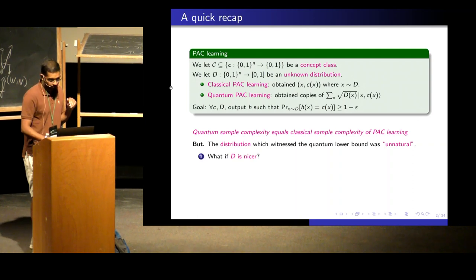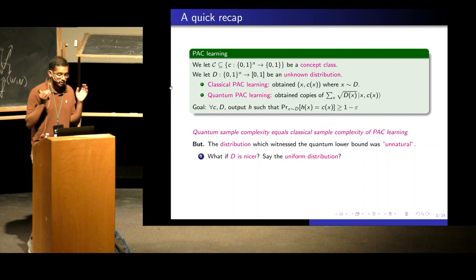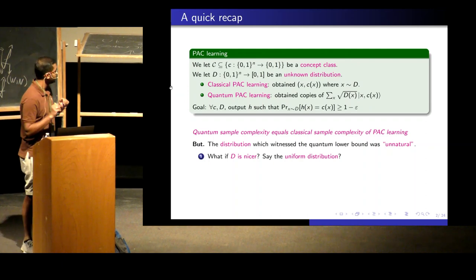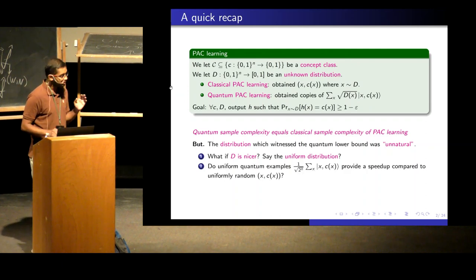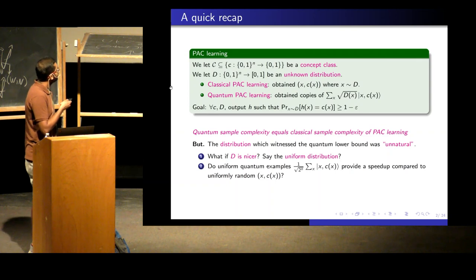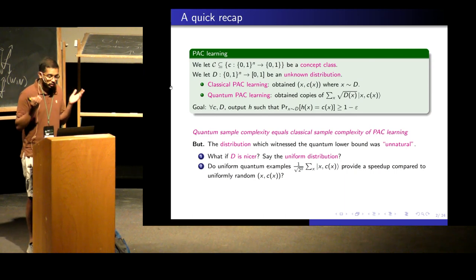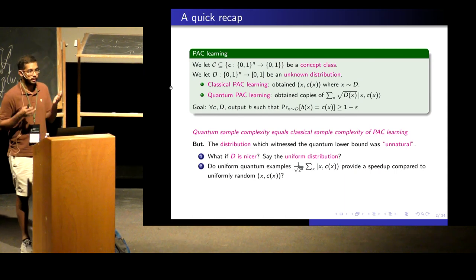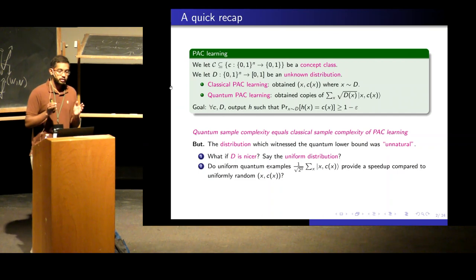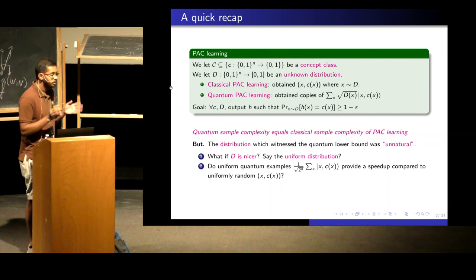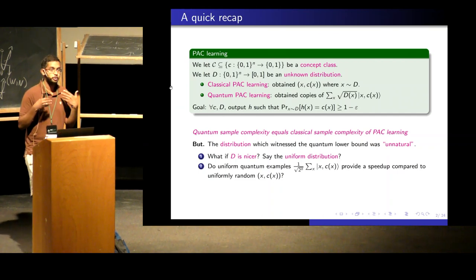Let's say for simplicity: what if D is just a uniform distribution? Then if D is uniform over n-bit strings, the amplitude is just 1 over square root of 2 to the n. So quantum examples are this uniform superposition, and classical examples are x drawn from the uniform distribution. The first question is: are quantum examples better than classical examples when we fix D to be the uniform distribution? In learning theory, this is called the distribution-dependent model of learning.